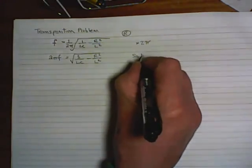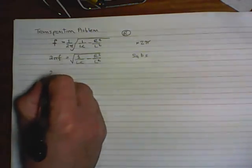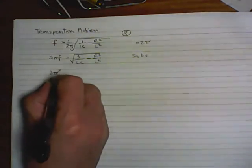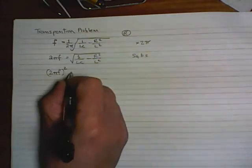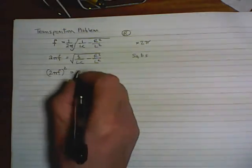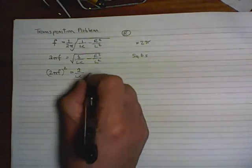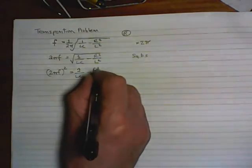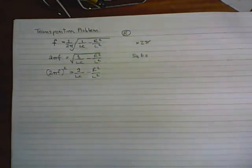So now we're going to square both sides. So I'll put there, square both sides. Okay, so we've got 2πf, and we'll put that in brackets, squared equals, well, this squared gets rid of the radical, 1 over LC minus R squared over L squared. So far, so good.